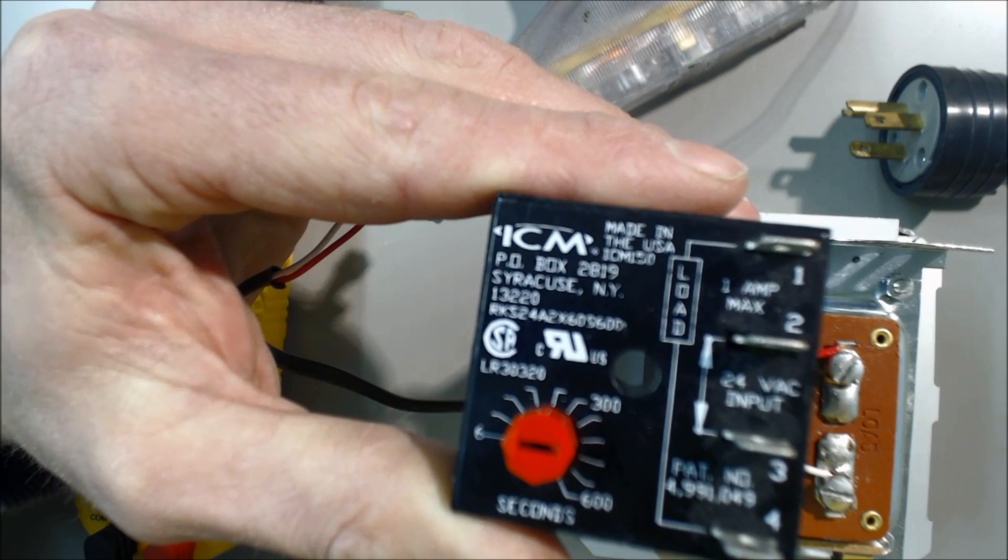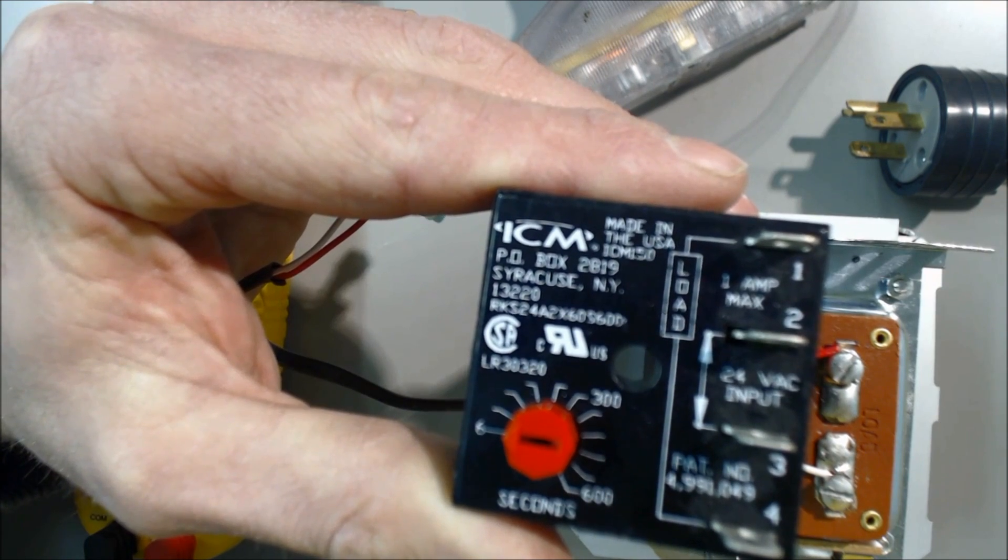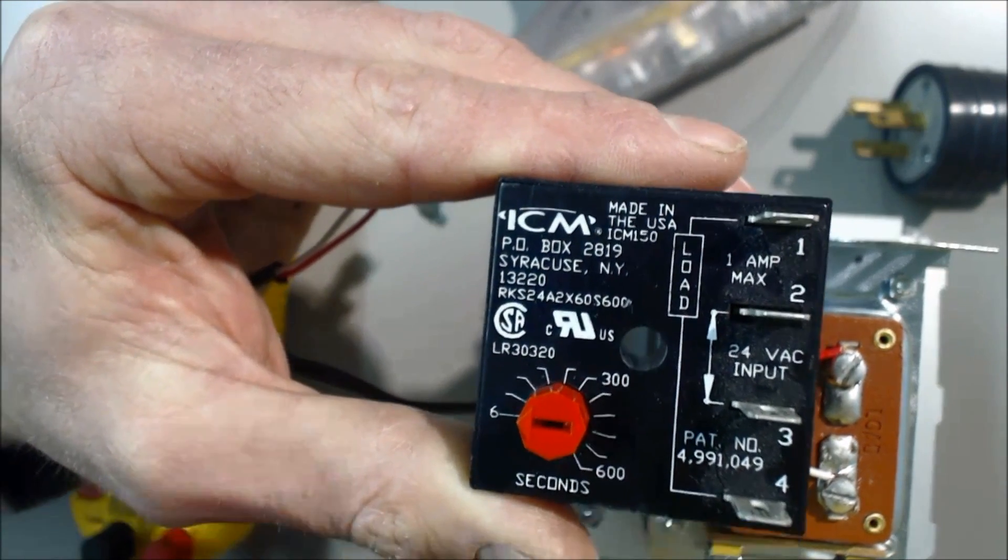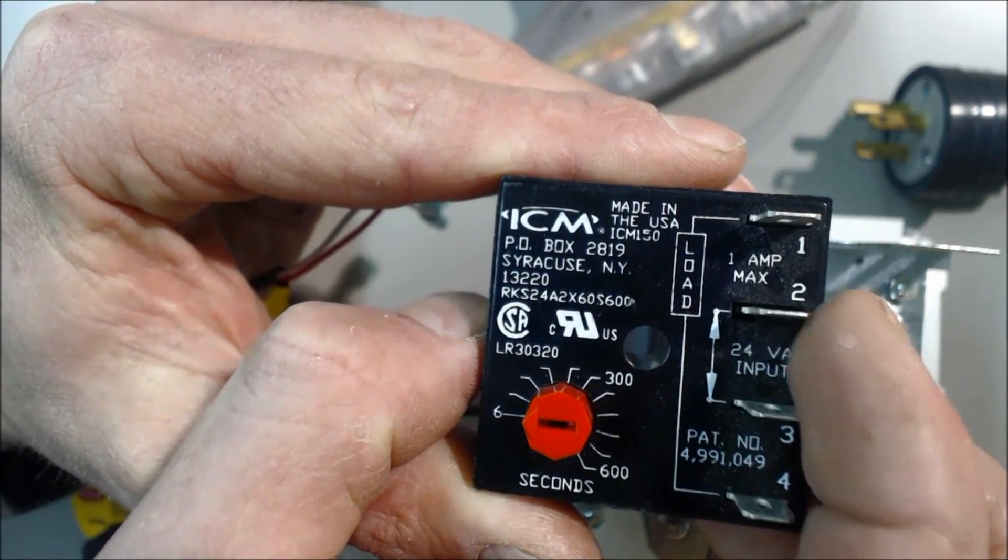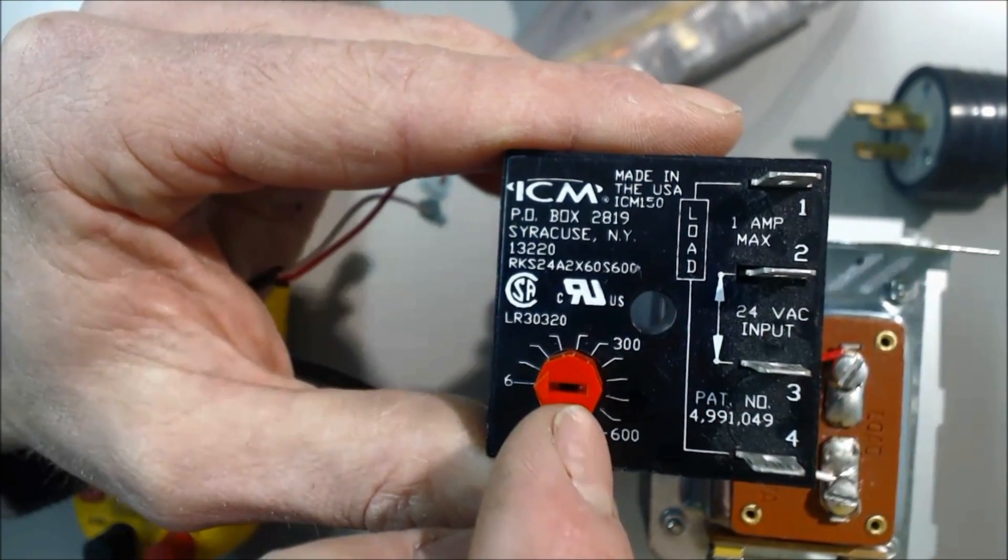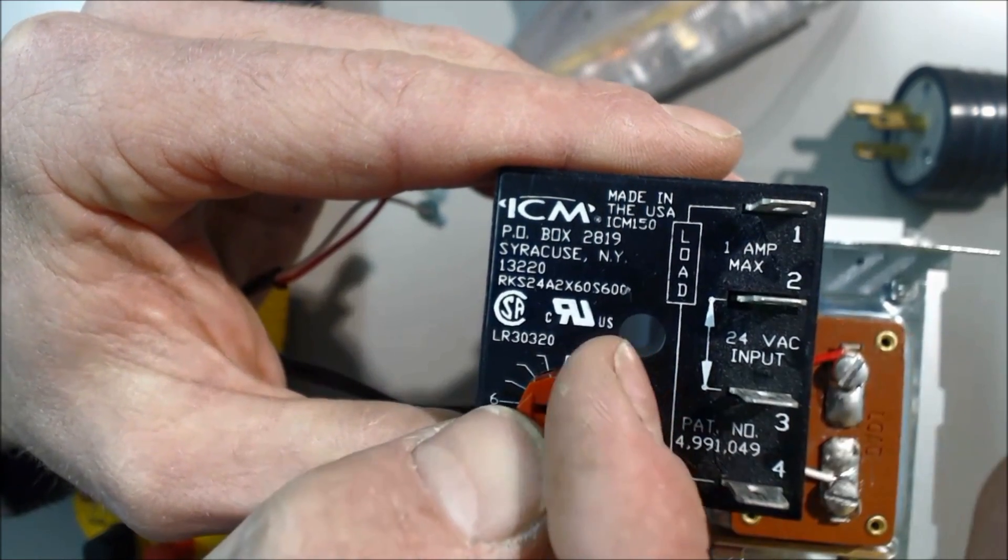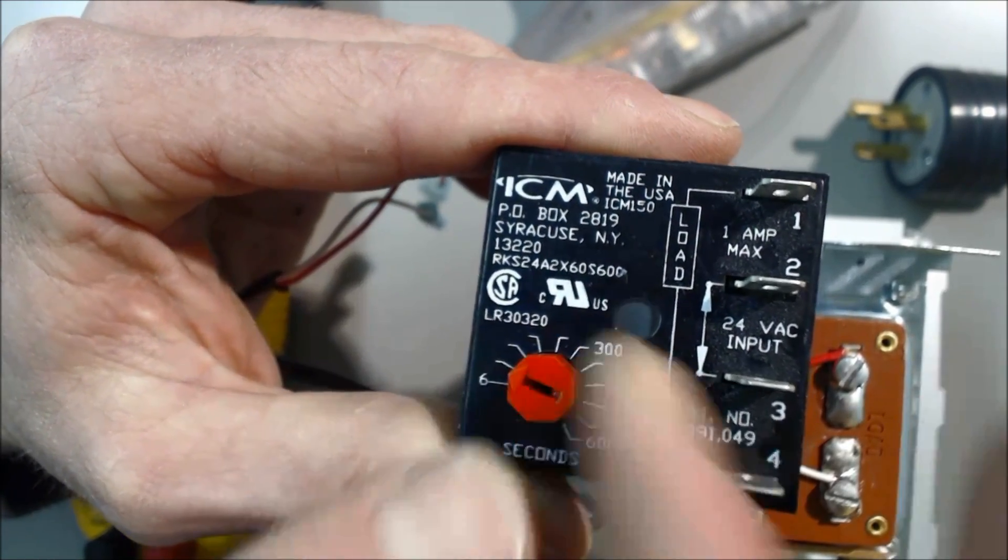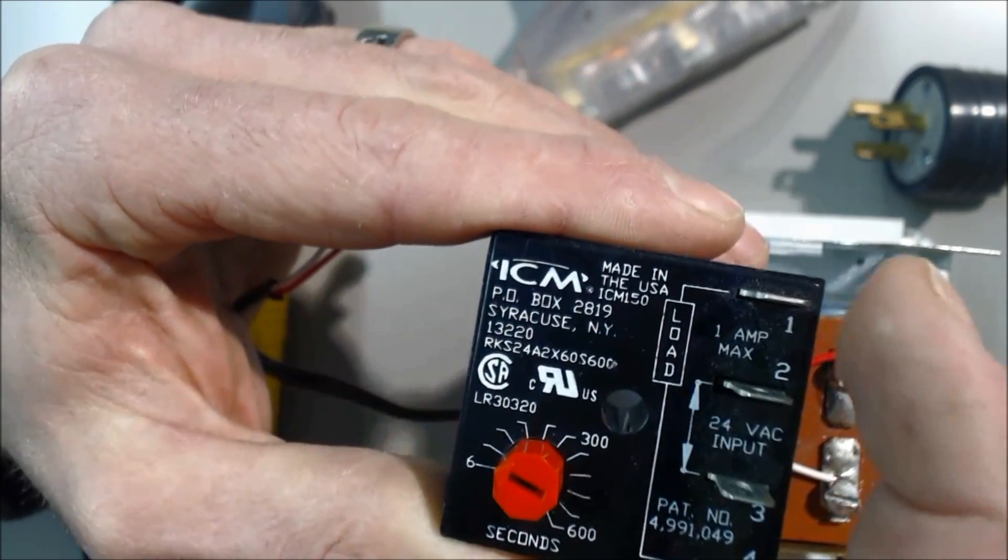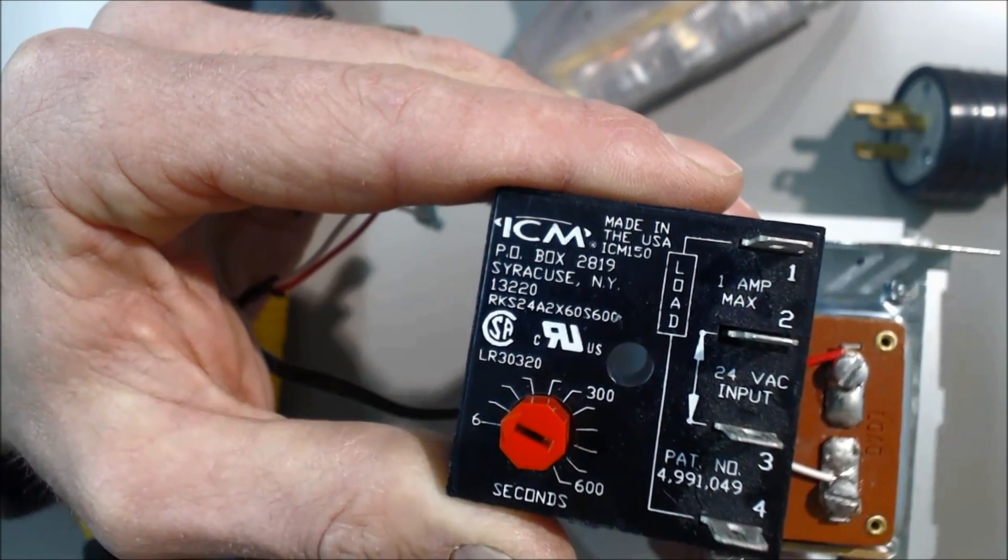This video is about delay-on-make timers. You have 24 volts coming into this, and then you have a timer on the side here. The second you send voltage in, you have a timed amount before this connects to this.